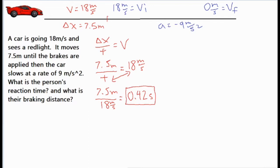All right, so what I did is I just cross multiplied the t and the 18 and they just switched places. So I had 7.5 divided by 18 and that gave us a final reaction time of 0.42 seconds.